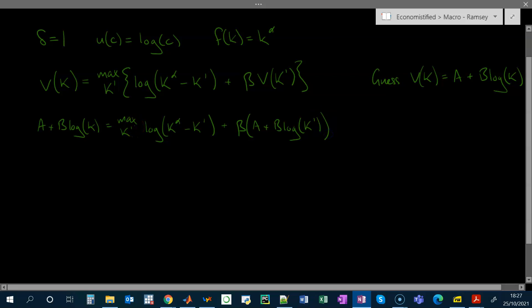Now we take first order conditions. So the derivative of this with respect to k prime is the following. And rearranging this, setting these two sides of the first order condition equal to one another, multiplying both sides by k prime, and then by the denominator here, we get that k prime is equal to beta times b k to the alpha minus k prime.